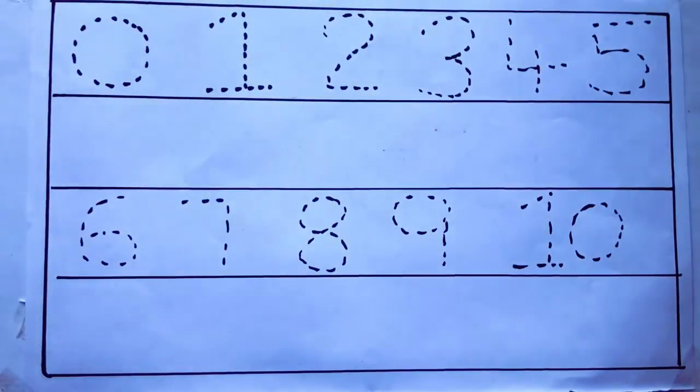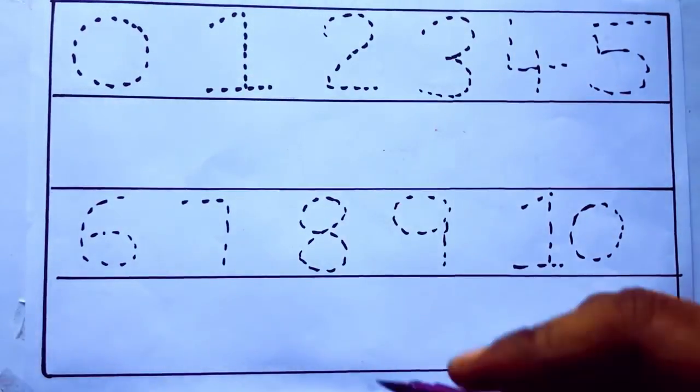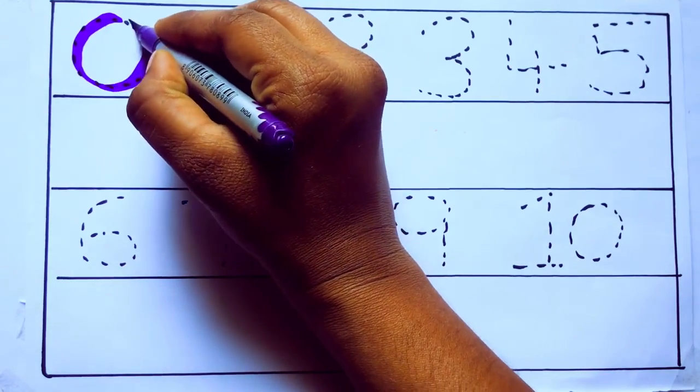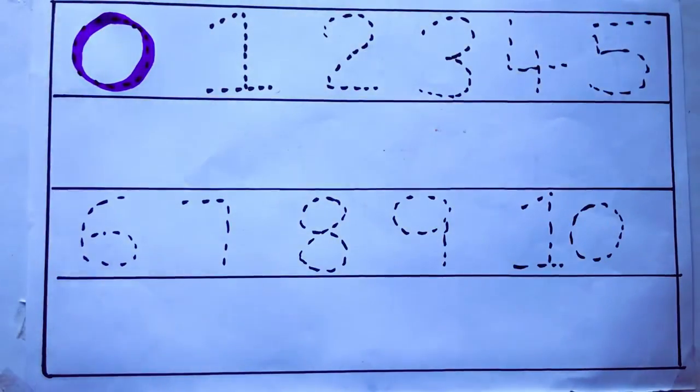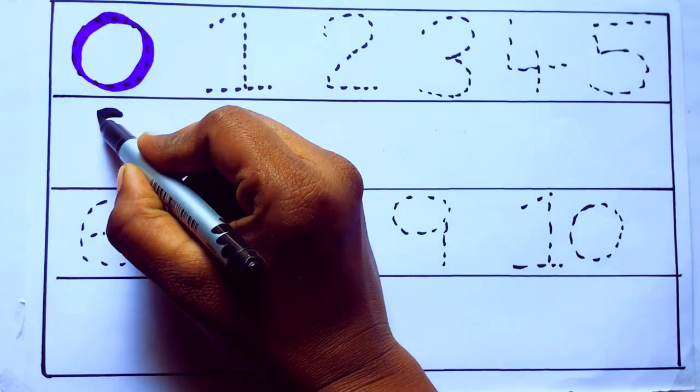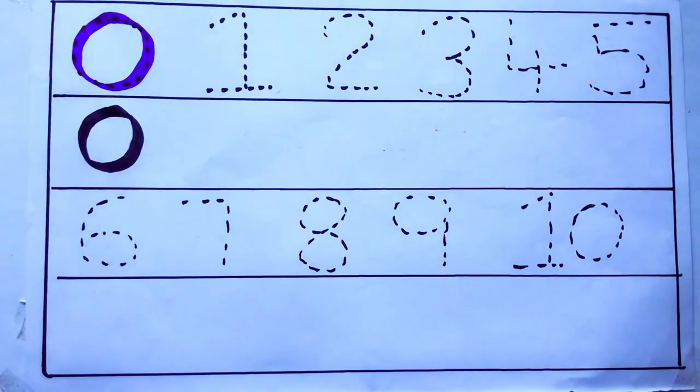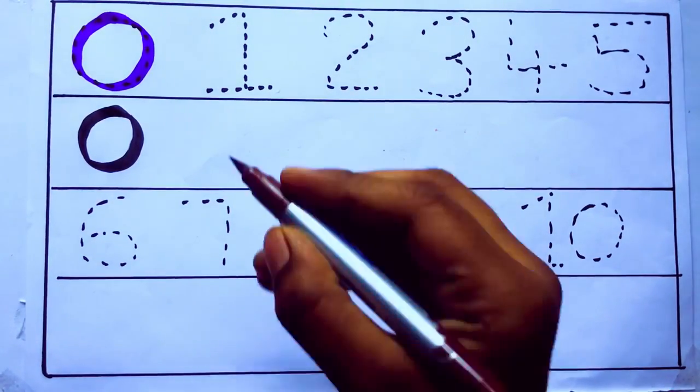Let's draw numbers. Violet color 0, Z-E-R-O.